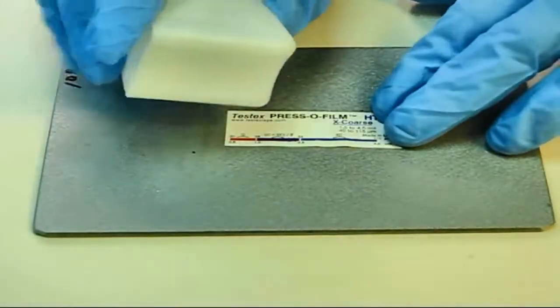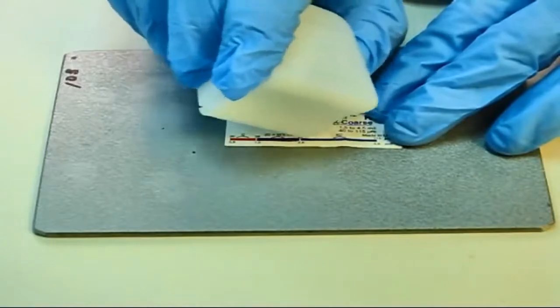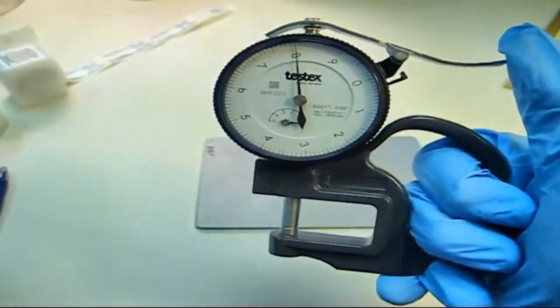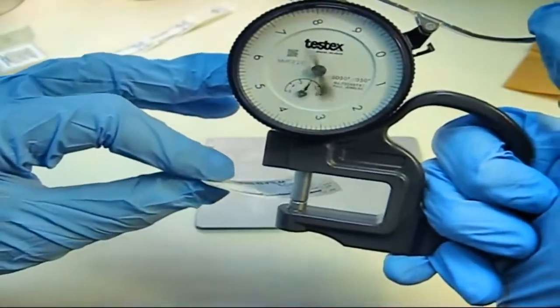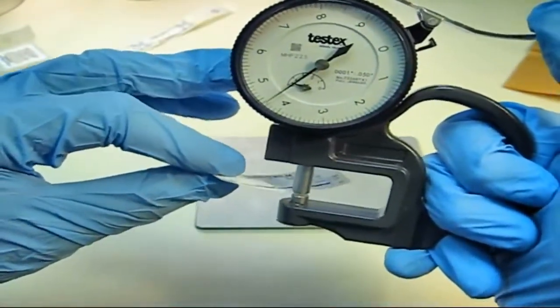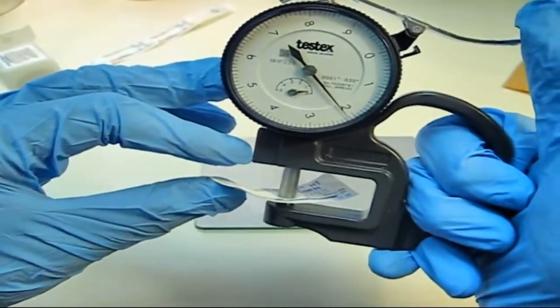In a pinch, the rounded edge of the tape dispenser is also an acceptable tool. Now, remove the replica and place it centered between the gauge anvil and the contact surface. The gauge reading is a measure of the peak-to-valley roughness, or profile.